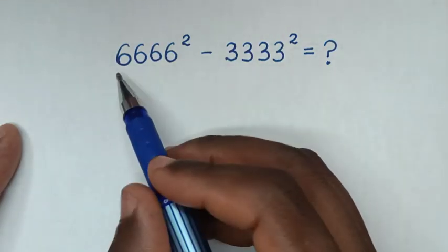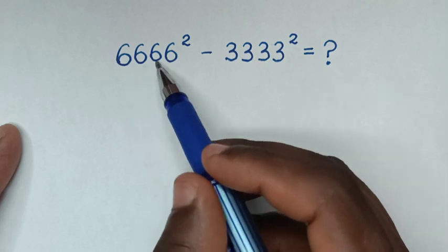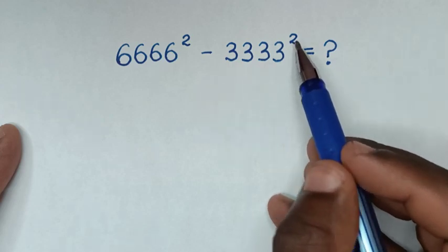Hello, you are welcome to solve this math problem: 6,666 squared minus 3,333 squared.